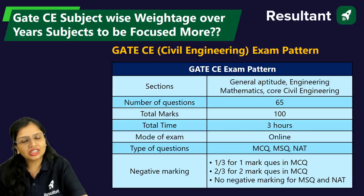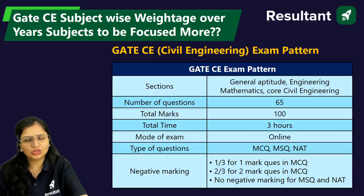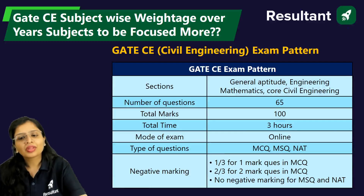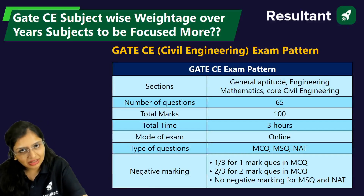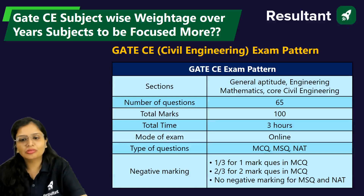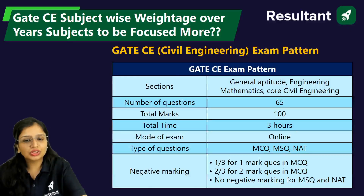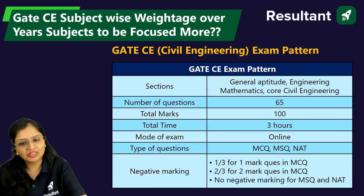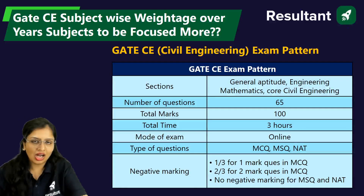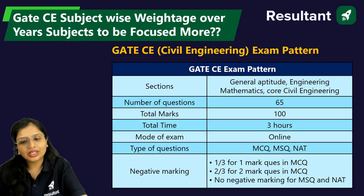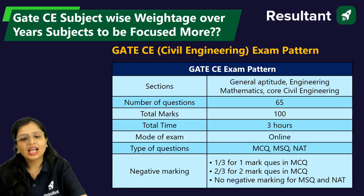You will be having General Aptitude, where English and aptitude portions will be there. Then you will be having Engineering Mathematics, and then four Civil Engineering technical subjects. The number of questions will be 65, number of marks will be 100, and total time will be three hours — so more than three minutes per question.